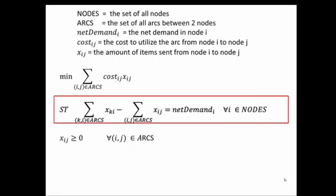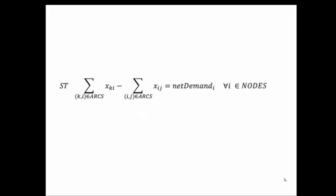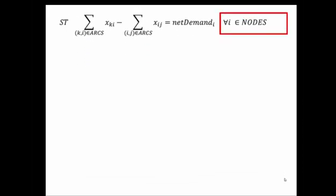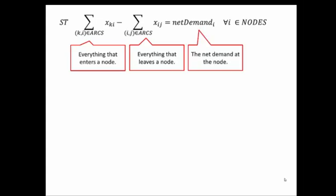The last part is these net demand constraints. We have one for every single node i. This first part says everything that goes from some other node in the network to node i, we want to add that up. And we want to subtract everything that leaves that node — so everything that goes from i to some other node j, we want to subtract. That result must equal our net demand for that node.